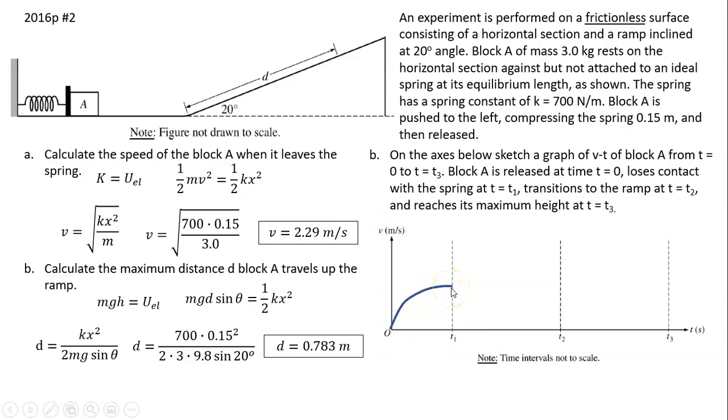From t₁ to t₂, the block is traveling horizontally. Since there is no friction, the velocity is constant. From t₂ to t₃, the block goes on the incline. When the block is on the incline, acceleration is g sin θ, and that acceleration slows the block down. Acceleration is negative and constant, therefore the slope is constant.